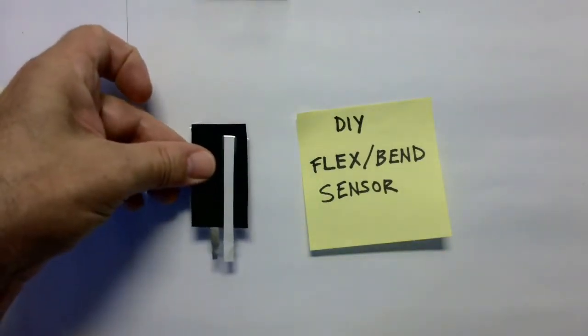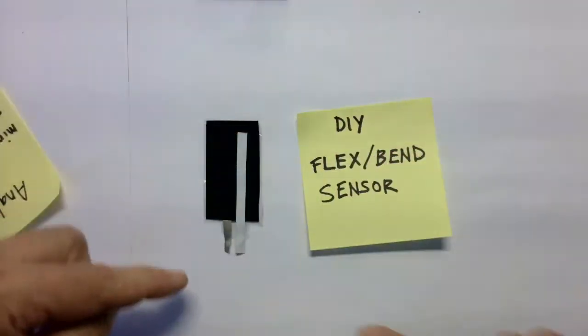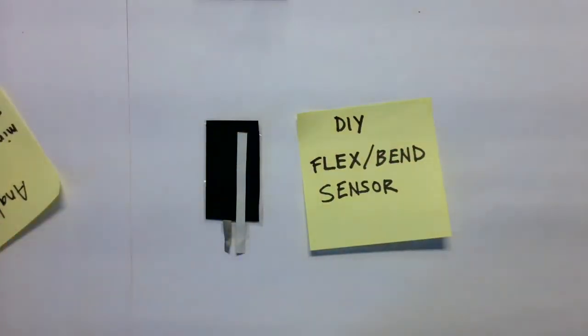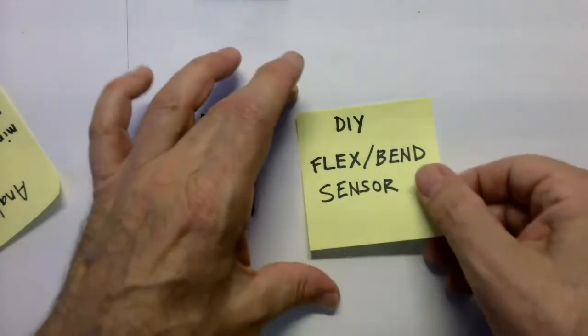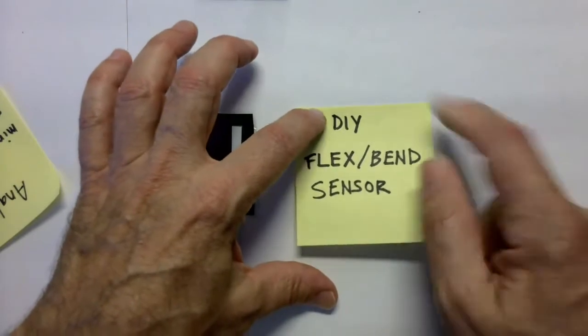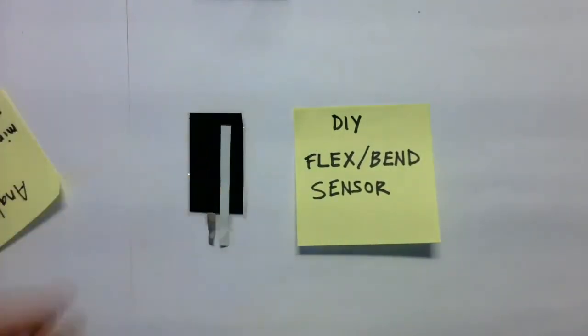This is a DIY flex bend sensor. It bends and outputs a variable voltage. You have in your worksheets for project one a diagram of how to make this, and this is a tutorial explanation of how you make it. So the first DIY sensor you made was a digital switch on off.